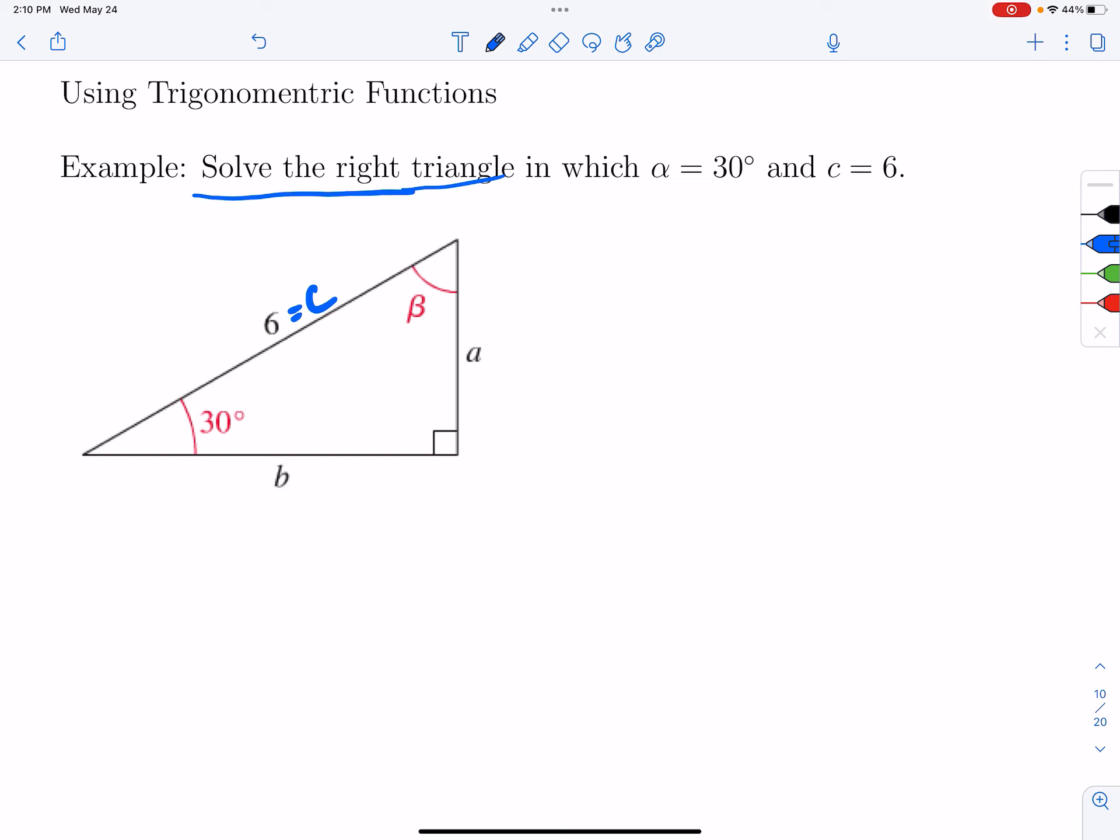So I'm going to call this angle c down here. So I have alpha is 30 degrees, beta I don't know that, c is 90 degrees, and then I have side a, side b, and side c, and I already know side c, that's 6.